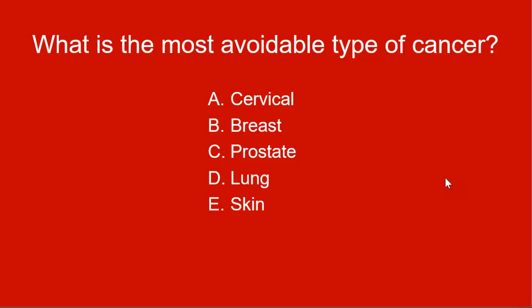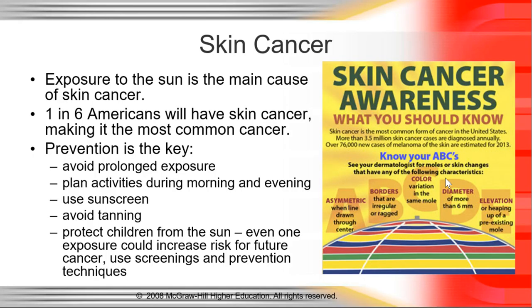What is the most avoidable type of cancer? Well, skin cancer, lung cancer, and cervical cancer are all avoidable. Cervical cancer is avoidable by getting the vaccine for HPV, because it is transmitted by a virus. Lung cancer is related to not smoking. The most avoidable type, though, happens to be skin cancer, because exposure to the sun is the main cause of skin cancer, and one in six Americans will have skin cancer. It's kind of the most common cancer, but it's really preventable and really treatable — if you catch it early, you can have it removed.